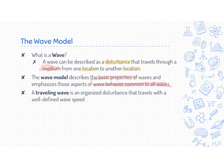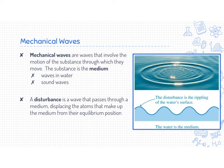We're going to talk a lot about traveling waves, which are organized disturbances that we can quantify, make predictions about, and which travel with a well-defined wave speed. We're also going to focus a lot on mechanical waves — waves that involve the motion of a substance, with the waves traveling through that substance.